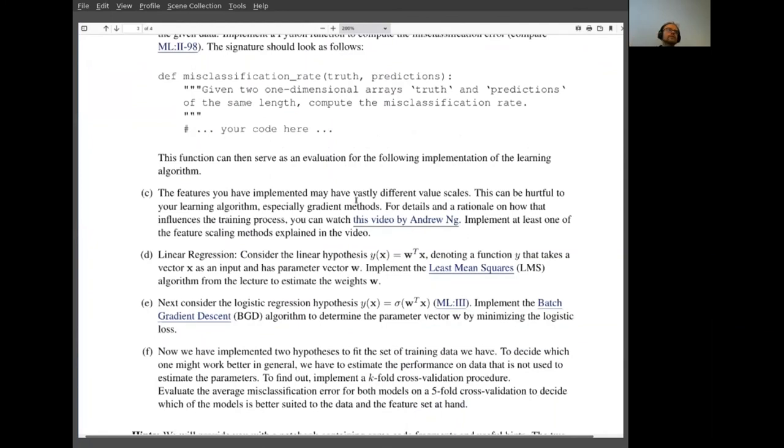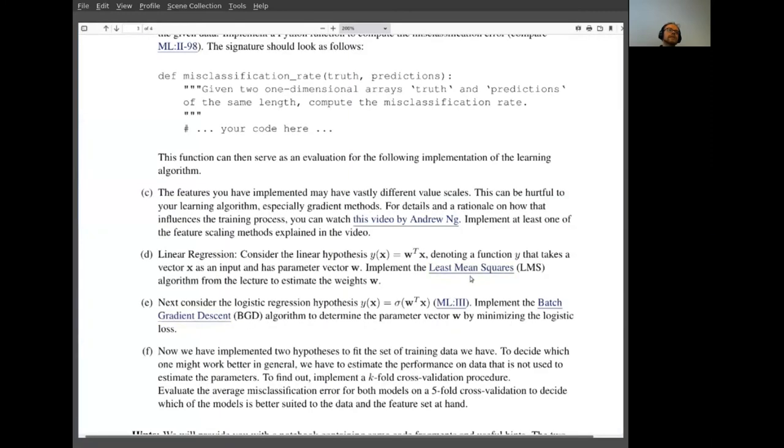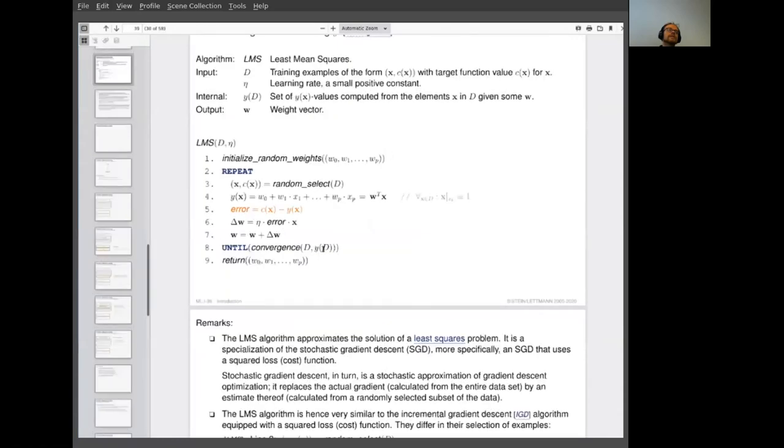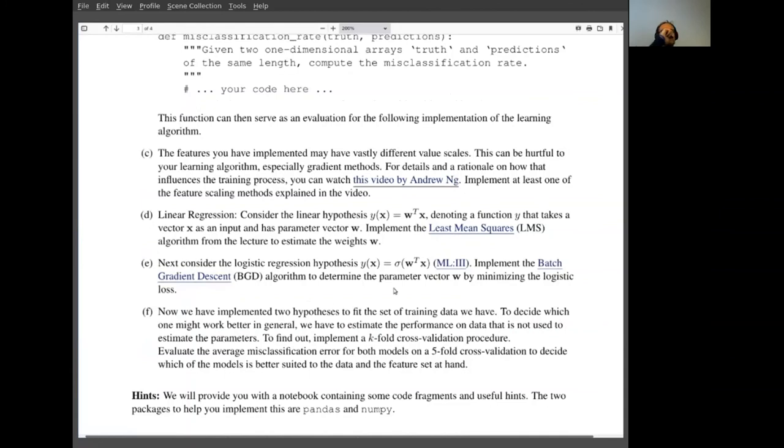Okay, the next thing is then to implement the logistic regression model. And again, here we have shown you an algorithm to do this on the slides. And so this is the batch gradient version where in each epoch we look at the entire data set. You can do this or you can do what we would call incremental gradient descent by looking only at a single example per iteration as we did in the least mean squares. These minor variations might even be interesting to try both and see how they compare. But the batch gradient is what we have on the slides here.